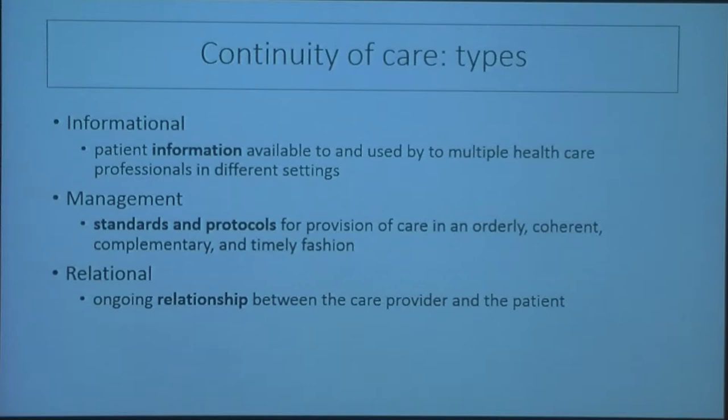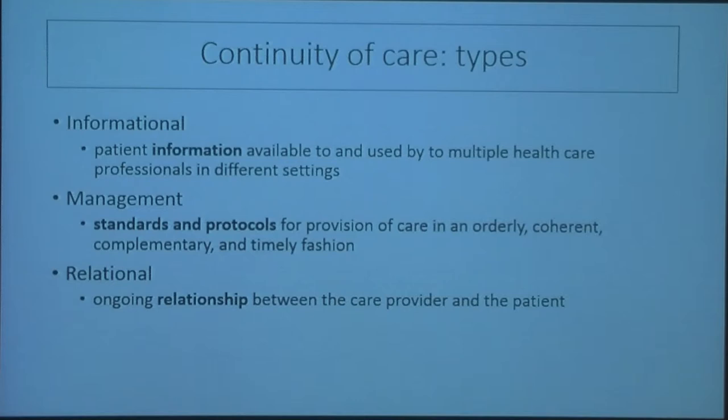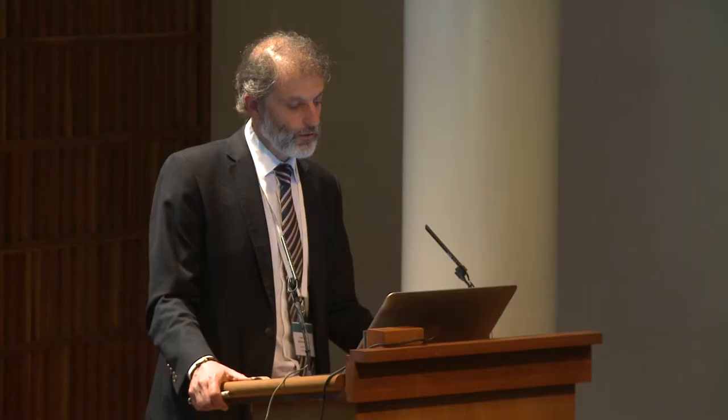To make things slightly more complicated rather than easier, we have informational, management, and relational continuity. Informational would be the operationalization that has to do with the relevant information about the patient — just making sure that everybody involved in taking care of the patient has access to all the information. Management means that everybody involved shares a common plan through standards and protocols. And relational continuity focuses on the relationship between a care provider, a healthcare professional, and the patient.